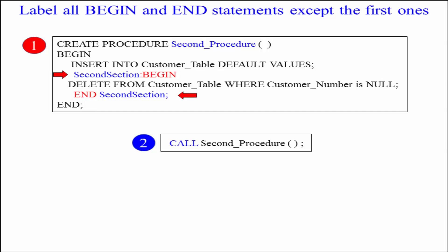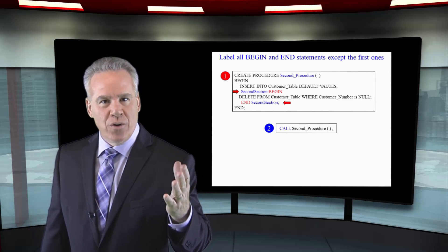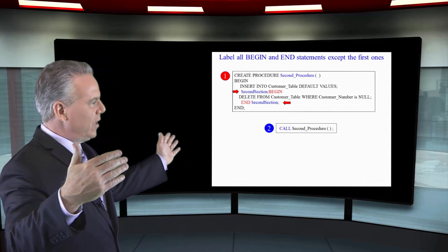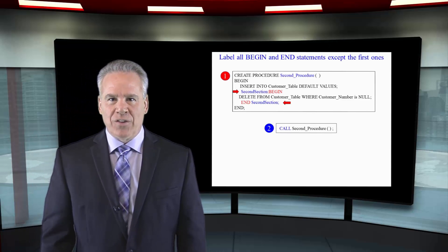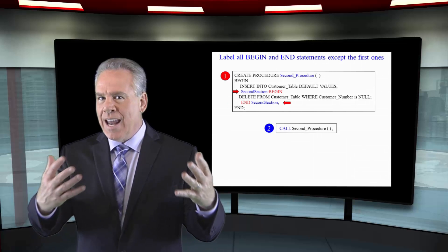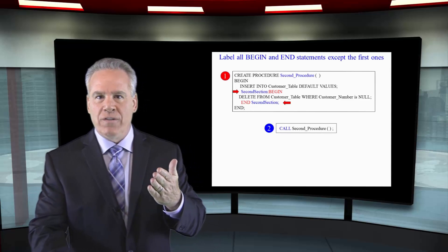Here we're going to create the procedure 'second_procedure', open paren, close paren, and I've got my begin and my end statements. Since those are the first ones, I don't need to give them a label — but I could if I preferred to. I do an insert into the customer table with default values. Now I have a second section label, and you can see my begin statement where I then say delete from the customer table where customer number is null. So in a sense, I put that record in and then I deleted that record. I end the second section. Of course, we always call a stored procedure. When you create it, it actually compiles and then it's out there compiled, so when you call it, it's going to execute very, very quickly.